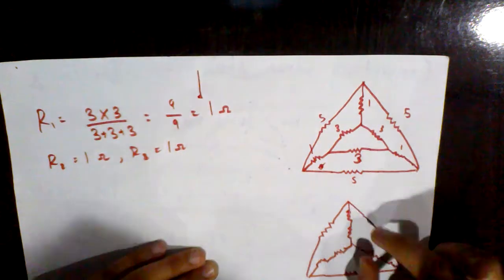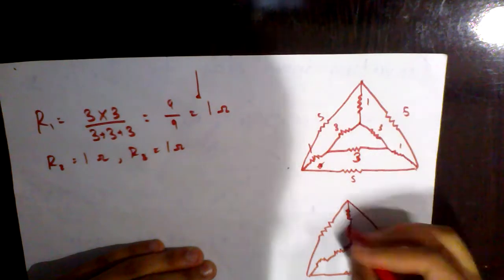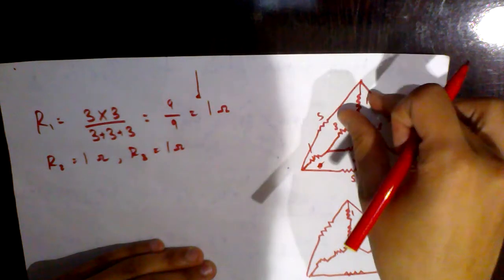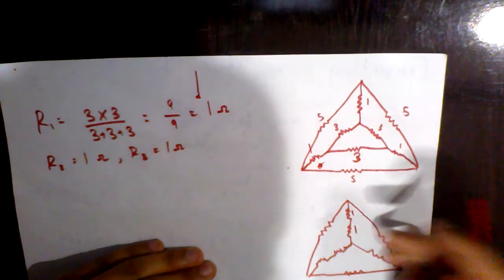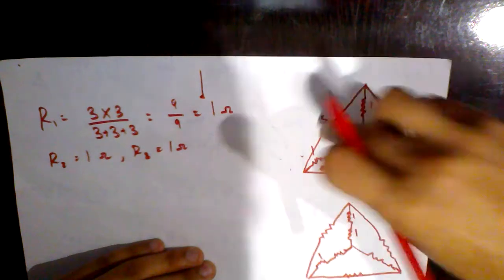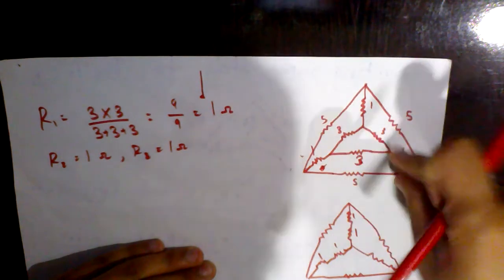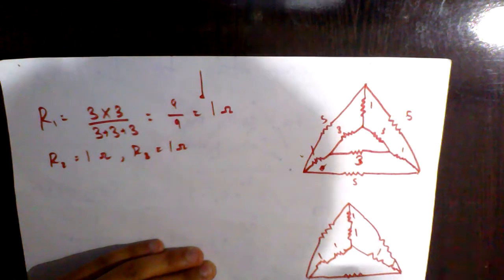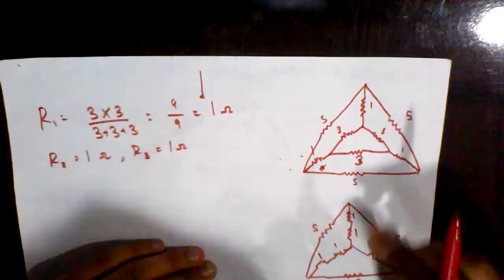So this is the rough equivalent diagram we get after converting delta to star. We already found the inner resistances; we converted delta into star. The inner star resistances are each 1 ohm, the existing series resistances are also 1 ohm each, and we have the outer resistances given as 5, 5, 5, 5 ohms.